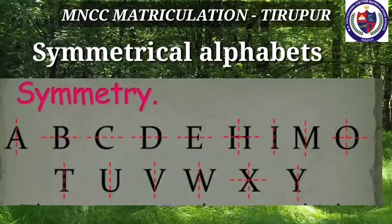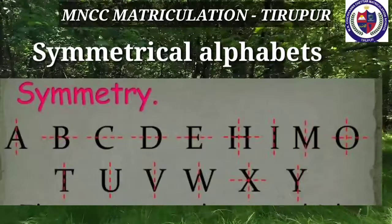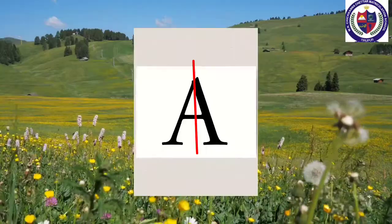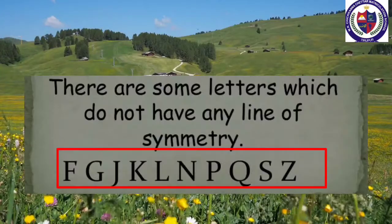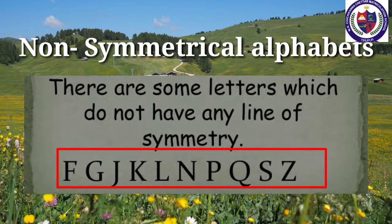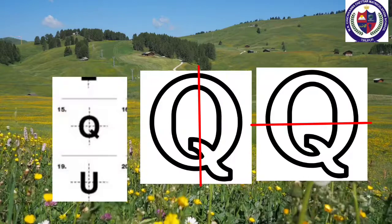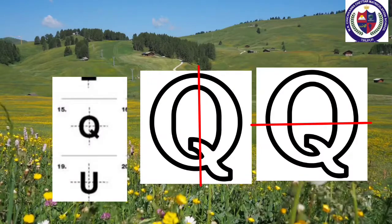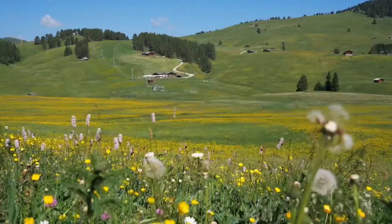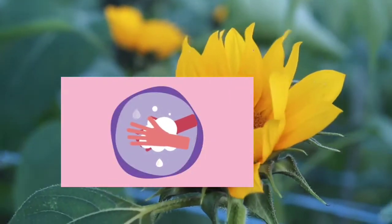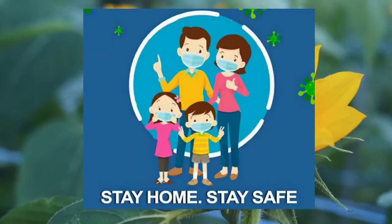Here, a list of symmetrical alphabets is given. Children, if you turn, rotate, flip, or cut each side of the alphabet, it is exactly like the other side — for your reference, here is the letter A. Here, some non-symmetrical alphabets are given, which means if you cut the given letter, one side of the alphabet is not exactly like the other. This is called a non-symmetrical alphabet. Thanks for watching my video — keep watching, keep learning, stay home, stay safe. Thank you.